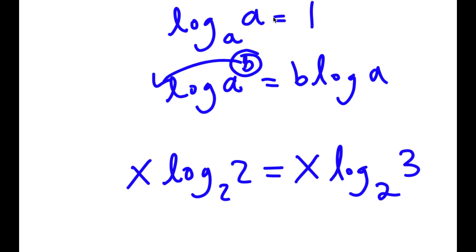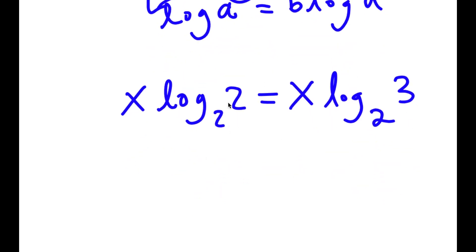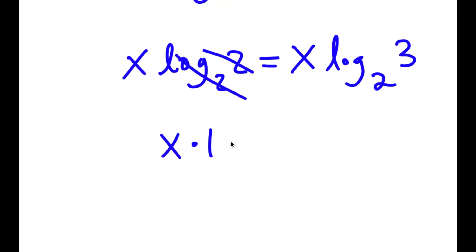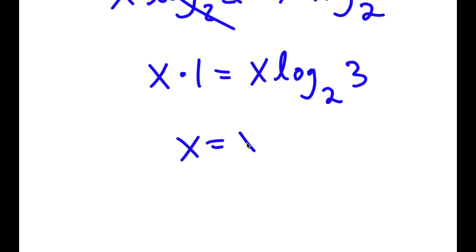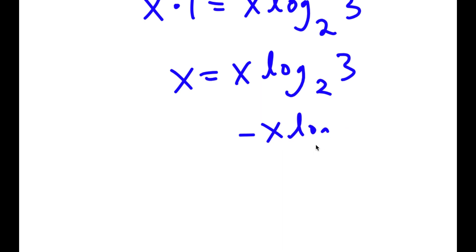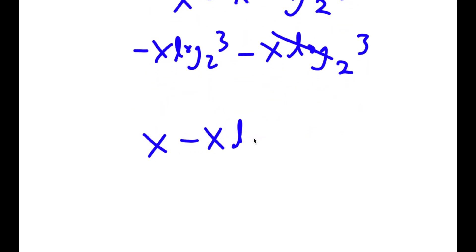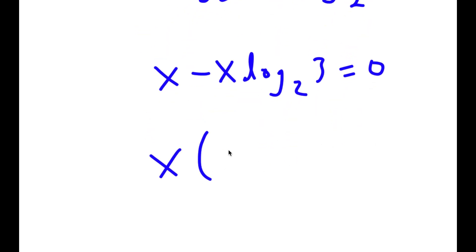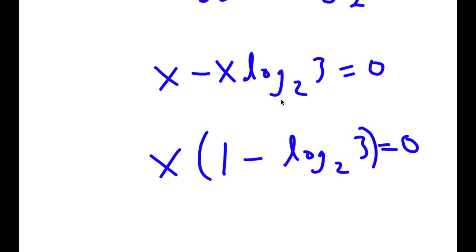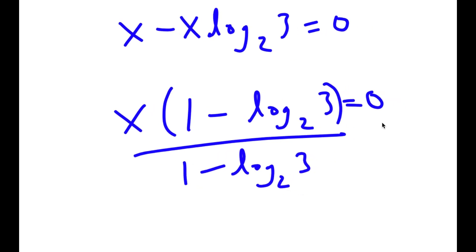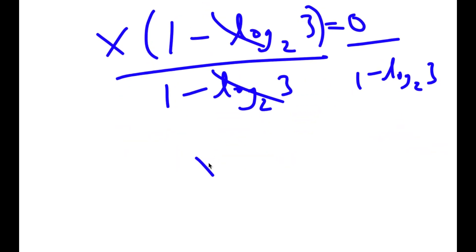Since log base 2 of 2 equals 1, I get x times 1 equal to x times log base 2 of 3, so x equals x times log base 2 of 3. Subtracting x log base 2 of 3 from both sides gives x minus x times log base 2 of 3 equal to 0. Factoring out x, I get x times 1 minus log base 2 of 3 equal to 0. Dividing both sides by 1 minus log base 2 of 3, I'm left with x is equal to 0.